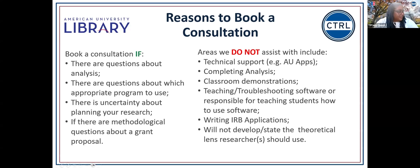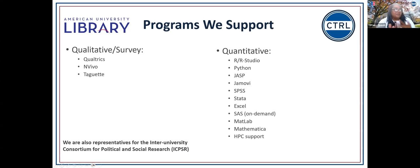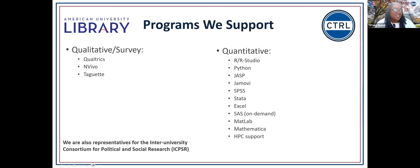For qualitative and survey programs, we support Qualtrics and NVivo — the two programs on campus. TOGET is an open-source program being covered in a training later today. I'm also very familiar with dedoose from my own research. Those are the three programs I can definitely assist with through CTRL.